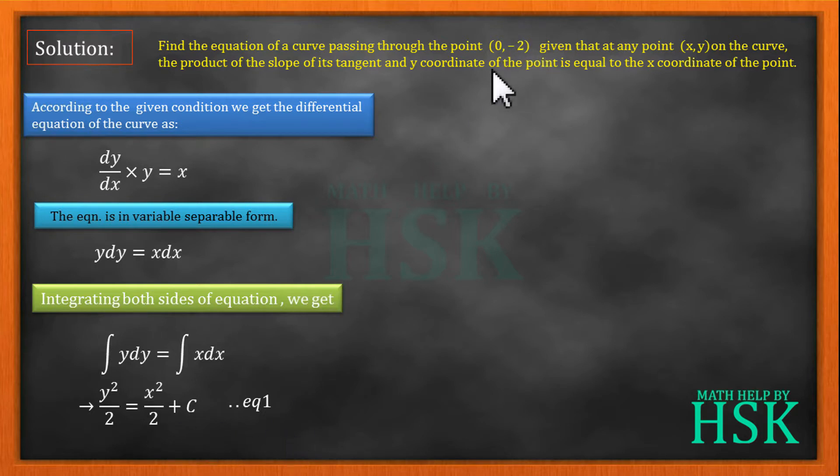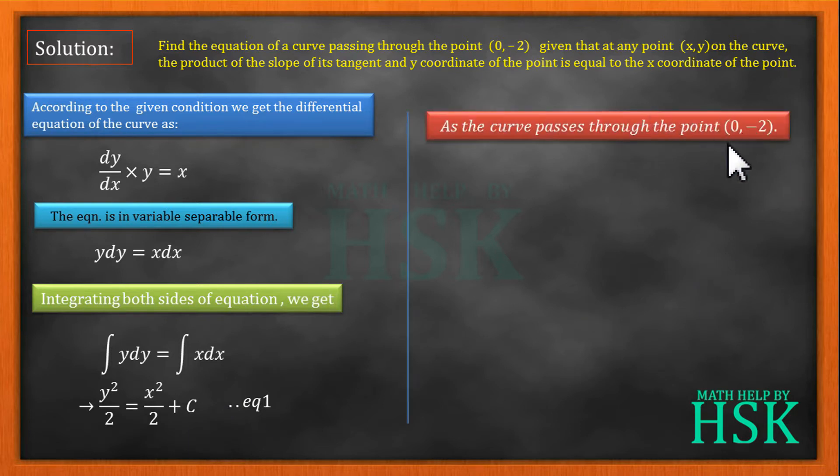Now we have to find the particular solution. For that we have to calculate the value of C from this equation. Because the curve passes through this point, writing y = -2 and x = 0, I get (-2)²/2 = 0/2 + C, or C = 2. This is going to become 4, so 4/2 is 2, so C = 2.